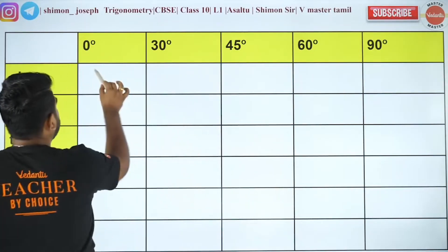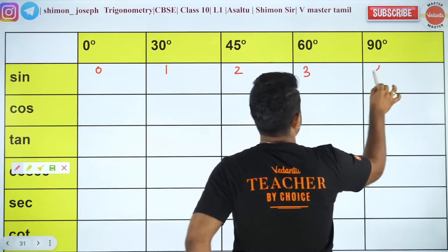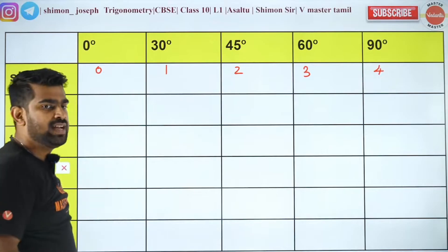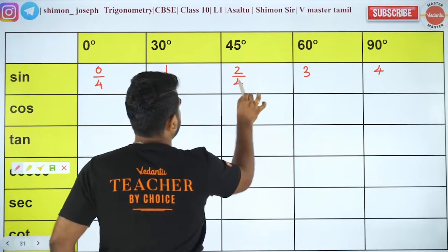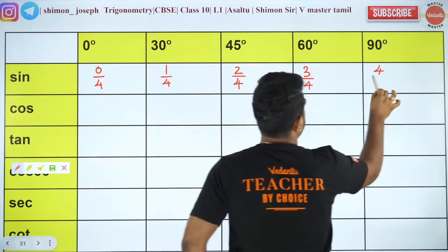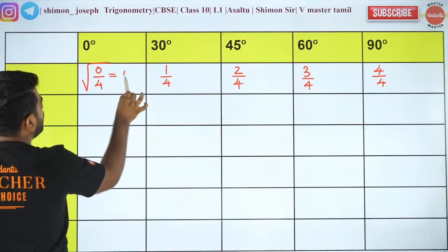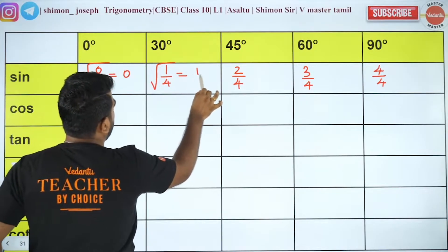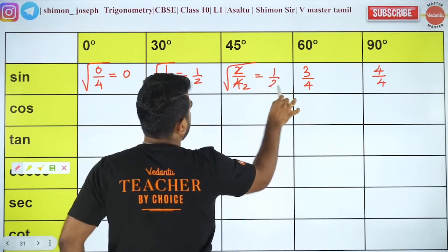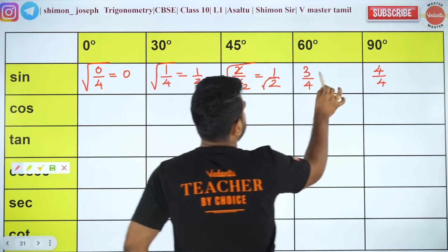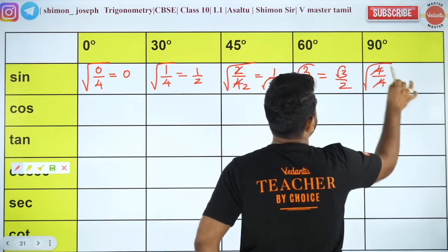What is the trick? Write 0, 1, 2, 3, 4. Let's divide all of them by 4. Then let's take the square root. Square root of 0/4 is 0. Square root of 1/4 is 1/2. Square root of 2/4 is 1/√2. Square root of 3/4 is √3/2. Square root of 4/4 is 1.